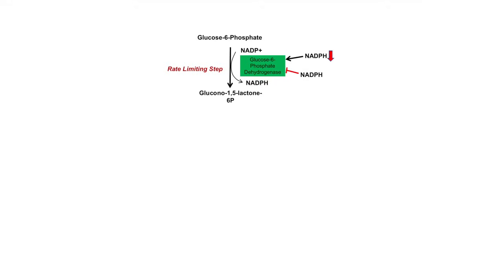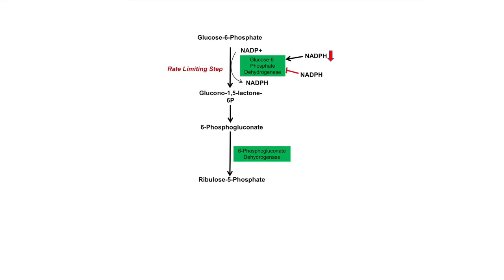Once you have glucono-1,5-lactone-6-phosphate, it can be converted into 6-phosphogluconate, which can then be converted into ribulose-5-phosphate by the enzyme 6-phosphogluconate dehydrogenase. In this step, NADP⁺ is again reduced to NADPH. So the first and the third steps of the pathway are the ones that generate NADPH, and these two enzymes are important to remember.